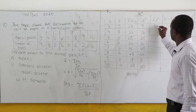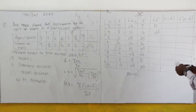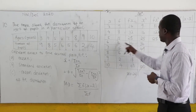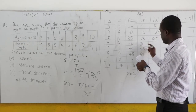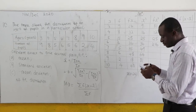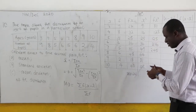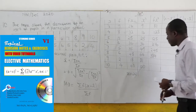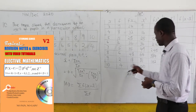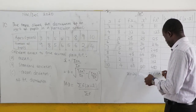Now fx² (f times x²): 9×9 = 81, 8×16 = 128, 5×25 = 125, 6×36 = 216, 5×49 = 245, 6×64 = 384, 2×81 = 162, 4×100 = 400. Adding all of these gives Σfx² = 1741.